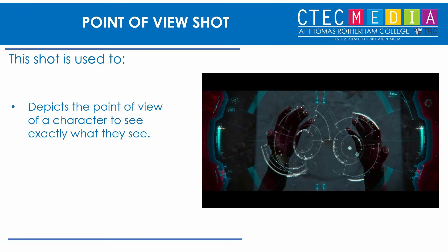A point of view shot depicts a shot from the point of view of the character — we see what they see. It's used to put us in the shoes of the character whose point of view we're experiencing, so we feel how they're feeling too. In this Spider-Man shot, he's looking at his hands checking out his powers, and we're doing the same thing — looking from his point of view — which establishes a connection between us and the character.